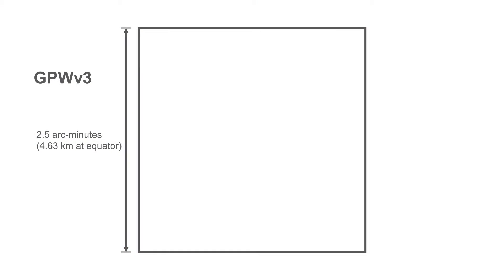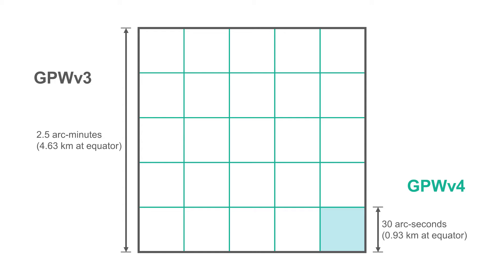Data processing capacity has increased significantly since the last version of GPW, meaning GPW-4 is now gridded using a much smaller cell size than in previous versions. Earlier versions were gridded at a 2.5 arc-minute grid cell size, or about 4 kilometers at the equator — that's about 2.5 miles. GPW-4 is now gridded using 30 arc-second grids, or about 1 kilometer at the equator. This grid size is now standard among global gridded population datasets, and lets GPW be easily integrated with a wide range of data.